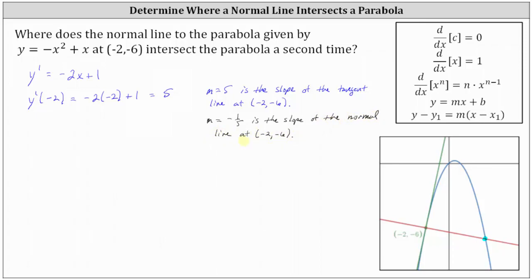Now we have enough information to determine the equation of the normal line because we know the slope of the line, and we also know the point negative two comma negative six is a point on the normal line. So let's find the equation of the normal line first in point-slope form, and then we'll write the equation in slope-intercept form. In point-slope form, the equation of the normal line is y minus negative six, which simplifies to y plus six, equals m, which is negative one fifth, times the quantity x minus negative two, which simplifies to x plus two.